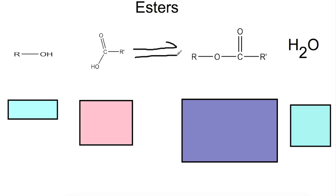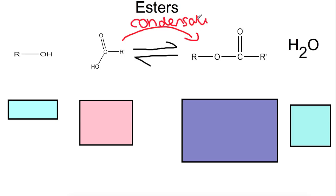The reaction is actually a reversible reaction — we'll come back to that in unit 3 when we look at chemical equilibria. In a condensation reaction we lose a small molecule whilst joining the other two together. In this case we're losing water, but the small molecule could be something like hydrogen chloride — it doesn't have to be water.